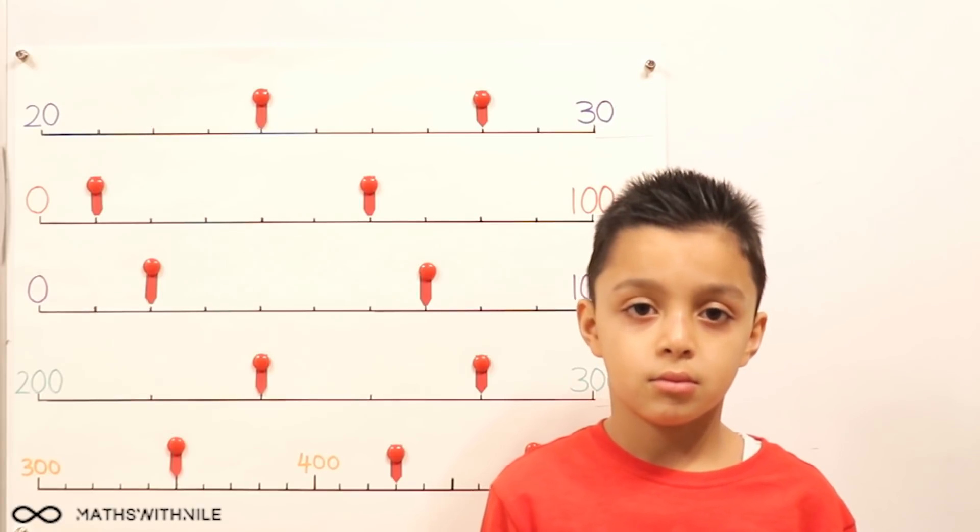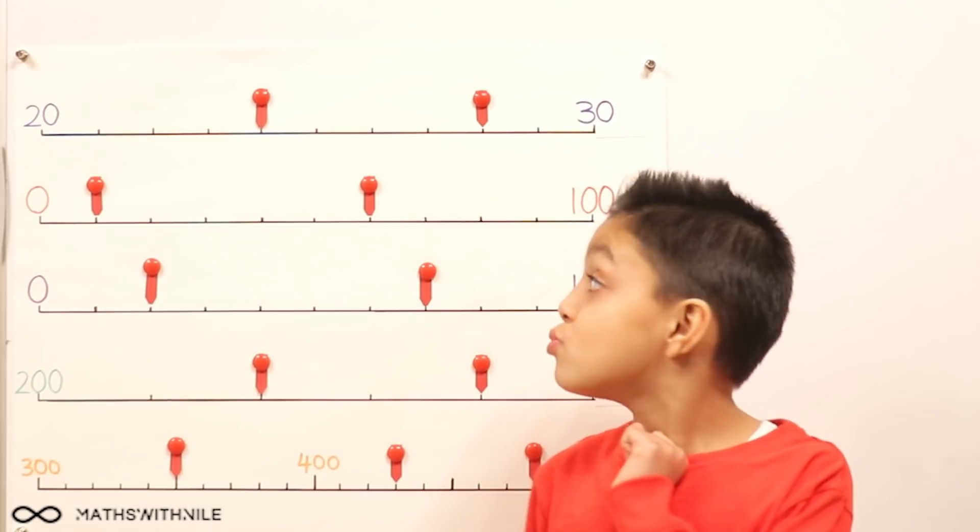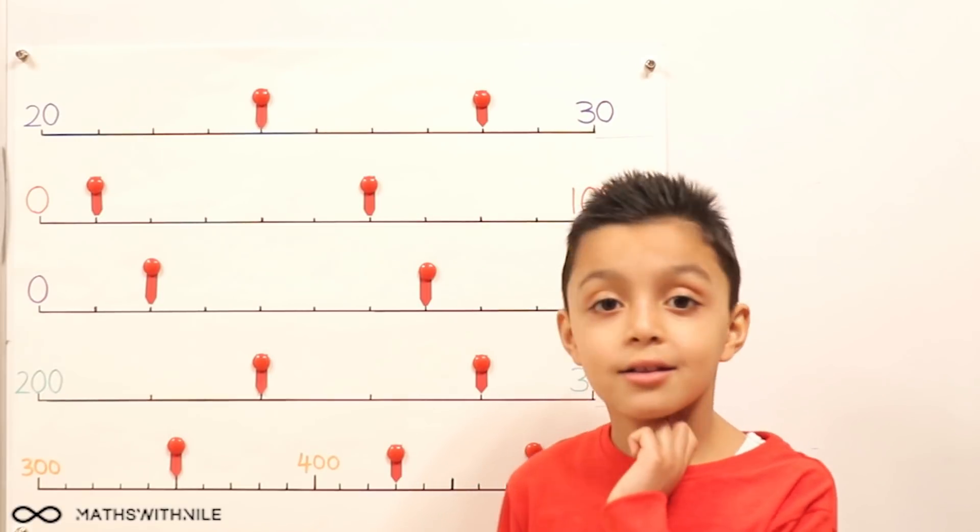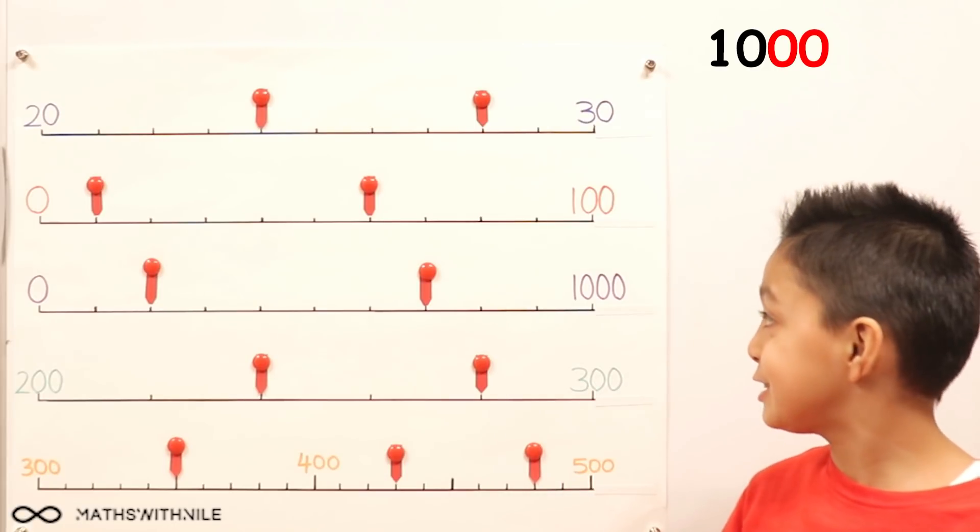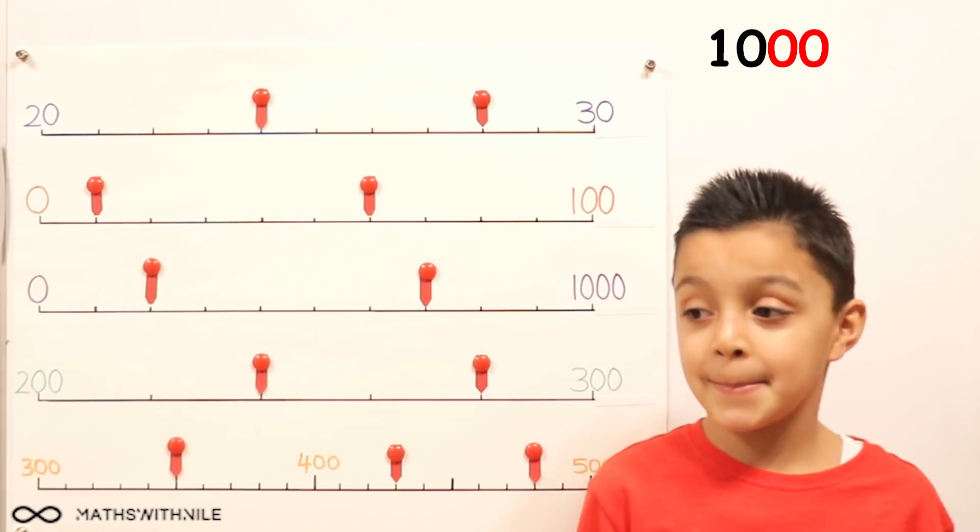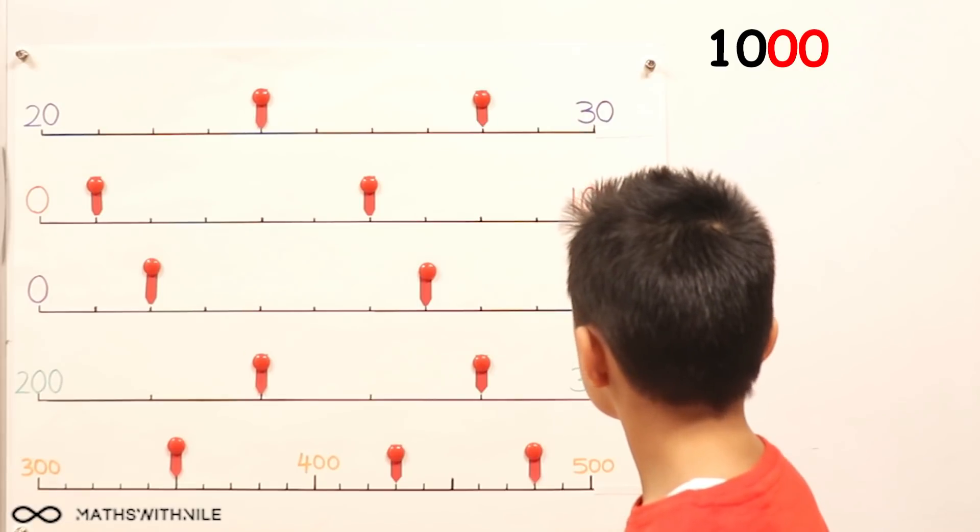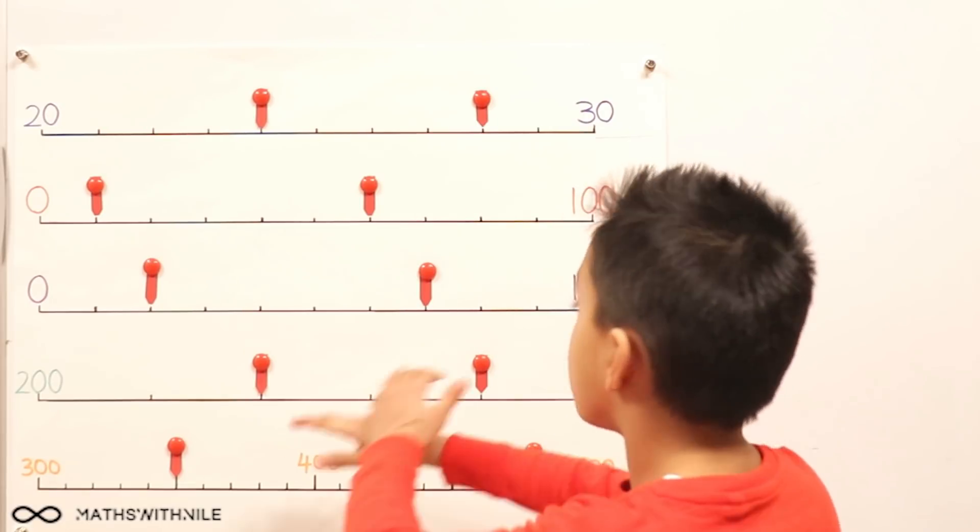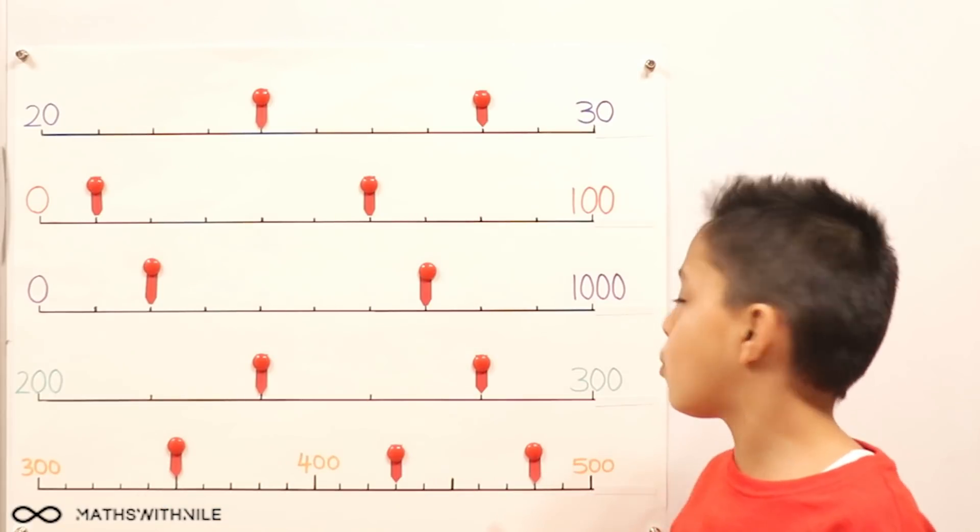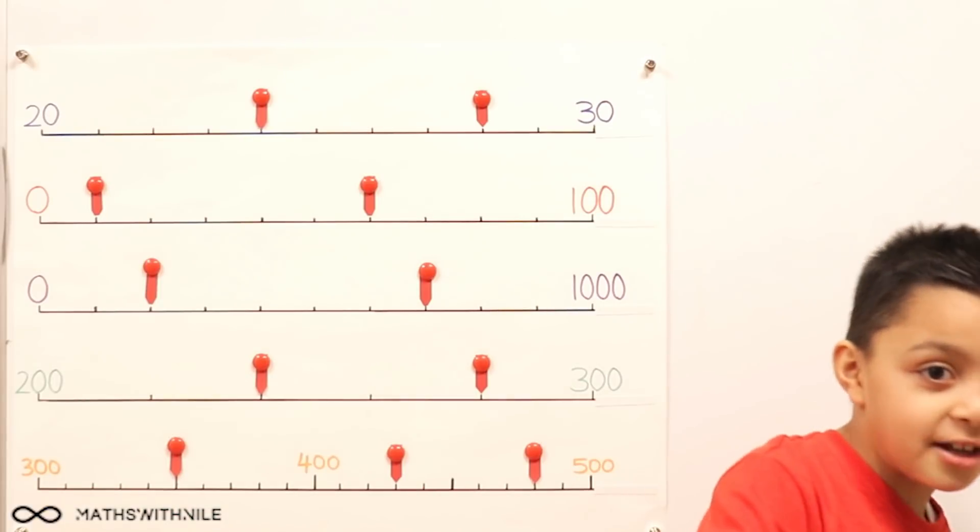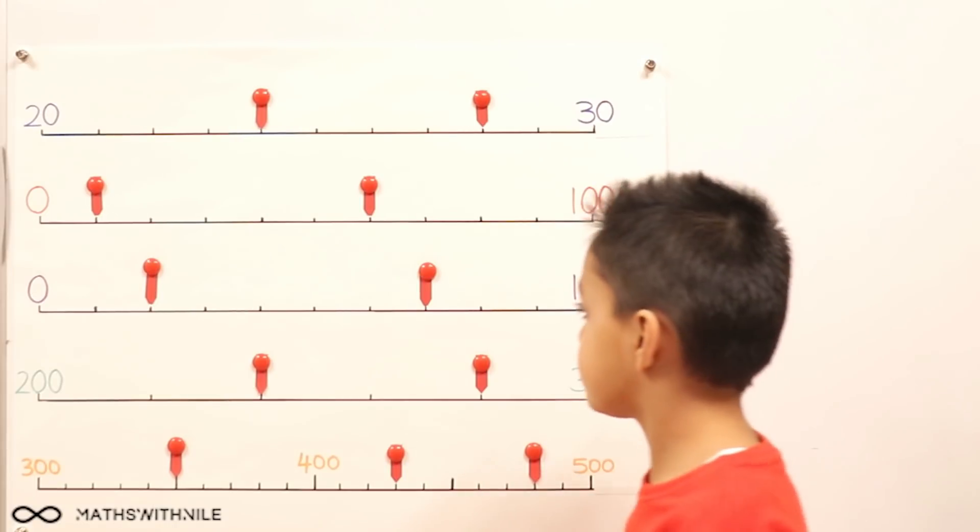So we've got to split up 1,000 into 10 equal spaces. But something you just said before can really help us. You said 1,000 is equal to what? 10 hundreds. So what happens if we split 1,000 or 10 hundreds into 10 equal parts? They're all split up into 100 because 1,000 divided by 100 equals 10.